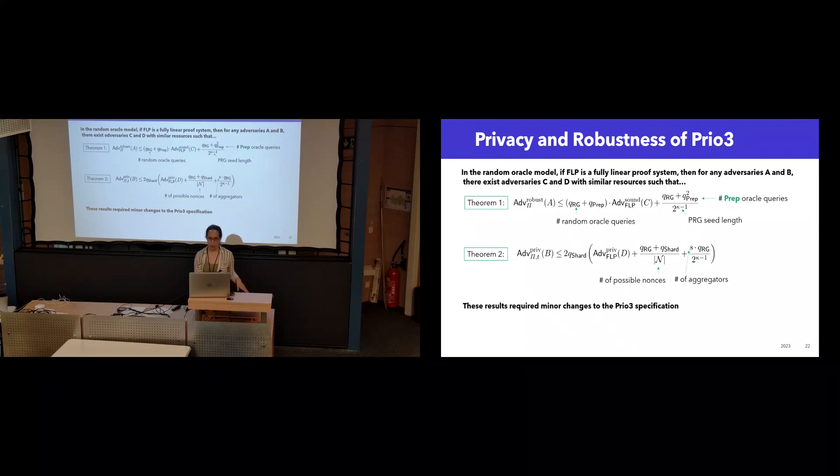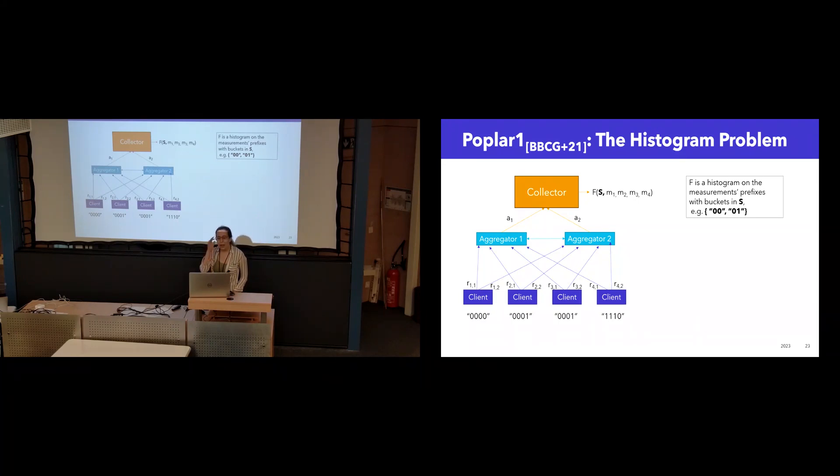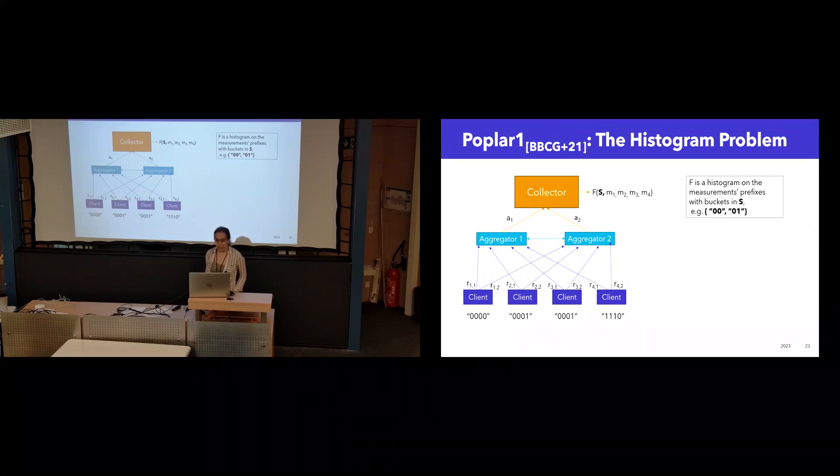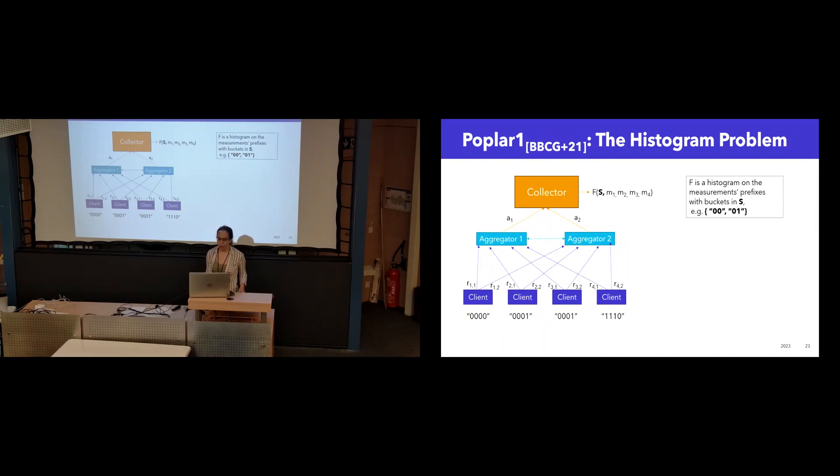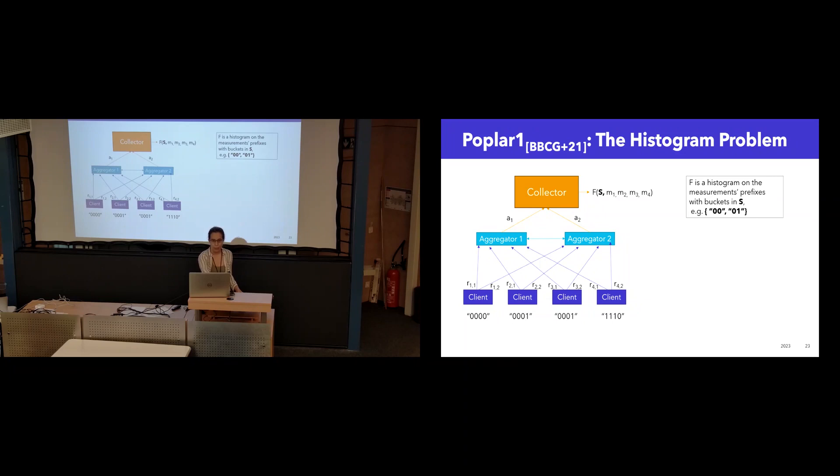So Poplar1 is another example of VDAF, also developed by Bonet and Corrigan Gibbs et al. And Poplar computes histograms on bit strings. So the collector now holds an additional parameter, which is a set of prefix bit strings, and it should be able to obtain counts of how many times each prefix shows up among client measurements.